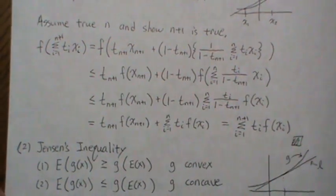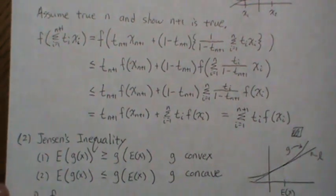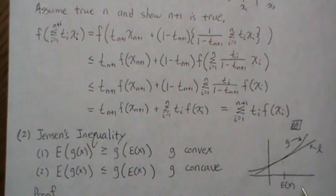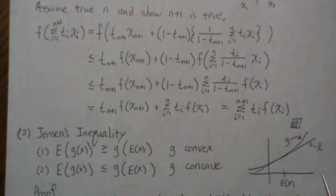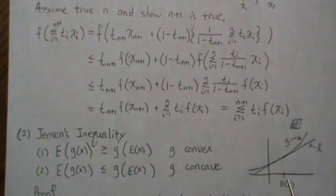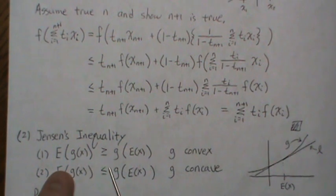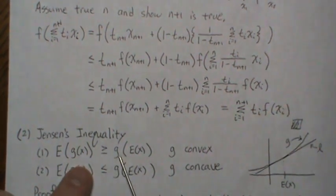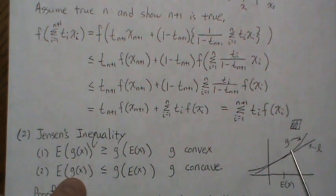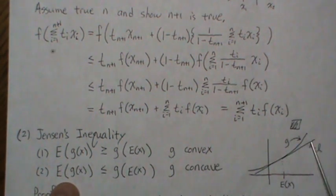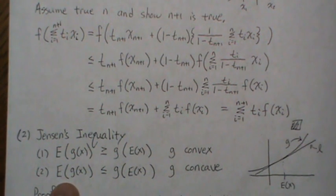Now the second version of Jensen's inequality — probably more frequent in statistics. As a reminder, for a convex function G, pick a tangent point at the mean of x, create a tangent line, and G is always above this line for every x. Jensen's inequality in this version says the expected value of G(x) is always greater than or equal to G of the expected value of x. The sign changes when G is concave.